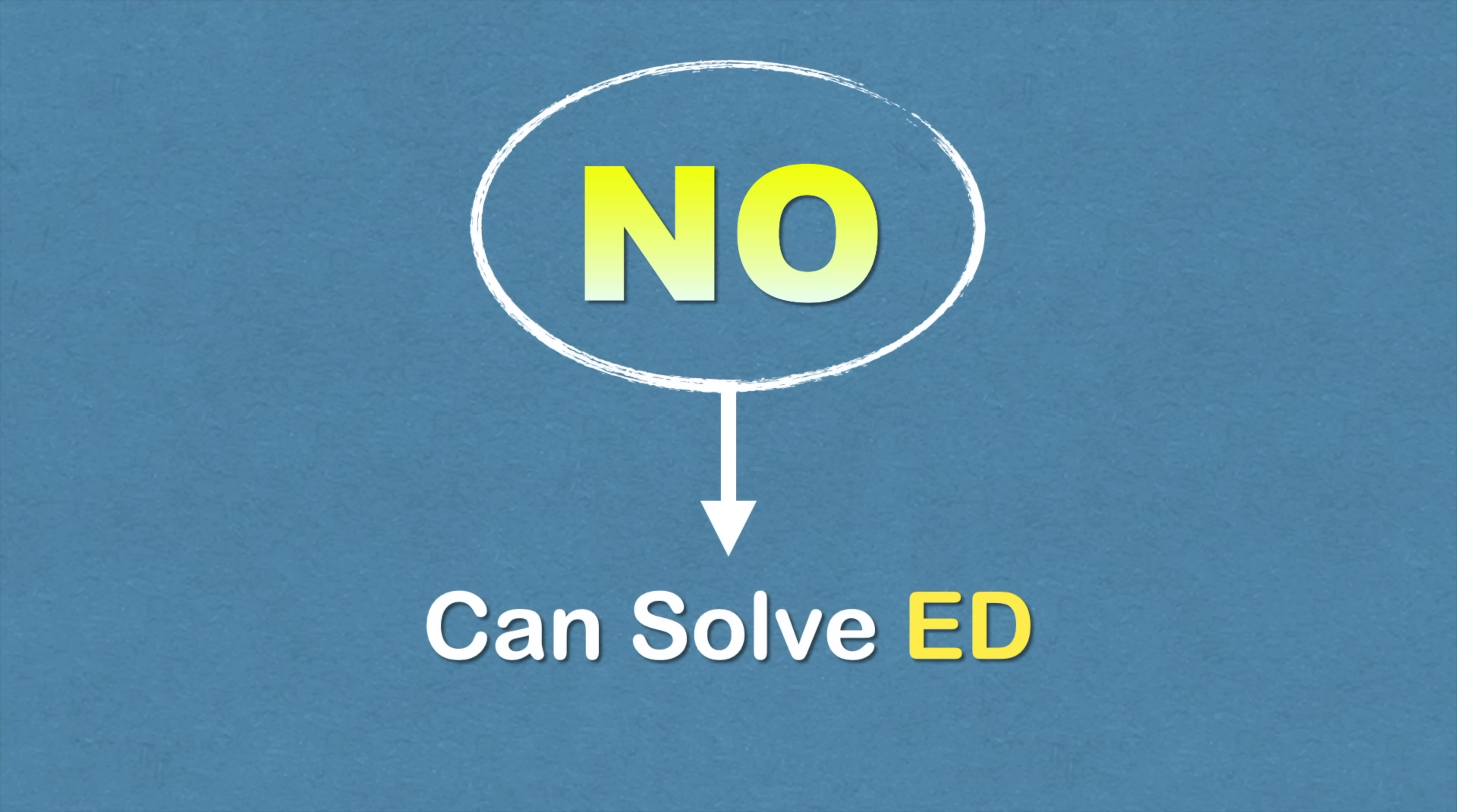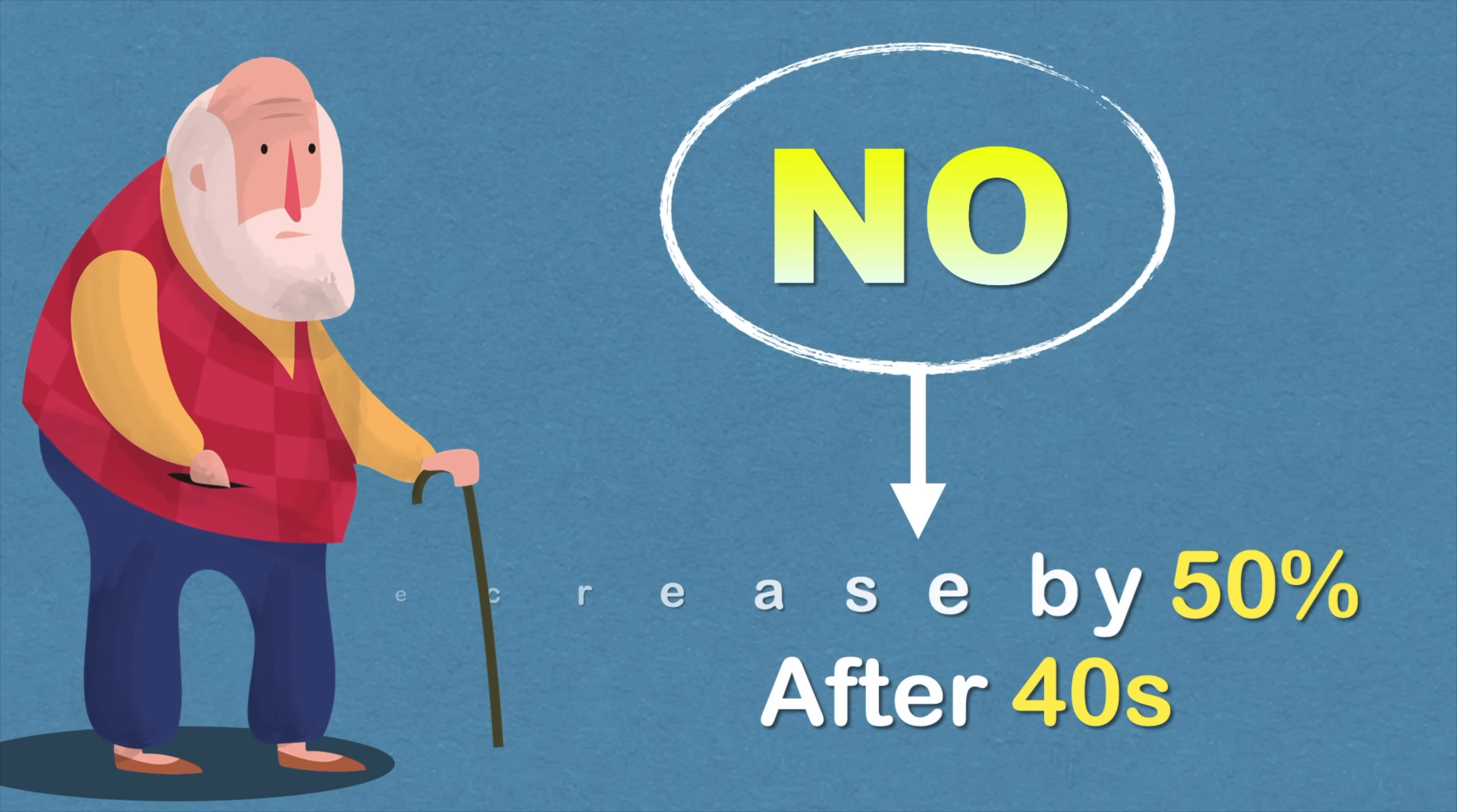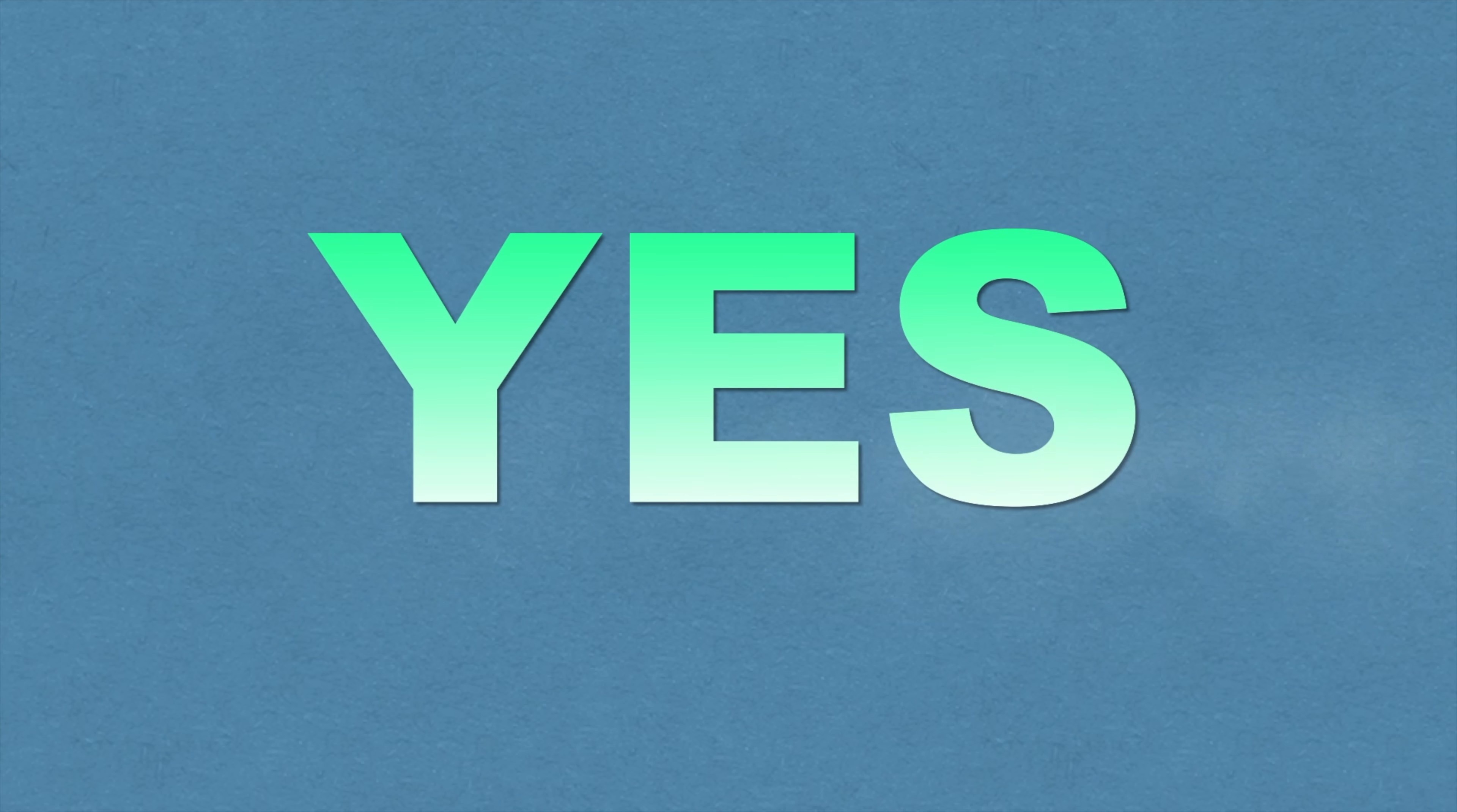So nitric oxide is the main key here. If we can increase nitric oxide level in our body it will solve the erection related problem significantly. Normally nitric oxide reduces by 50% after your 40s. So is there any way to boost nitric oxide level in our body? The answer is yes.